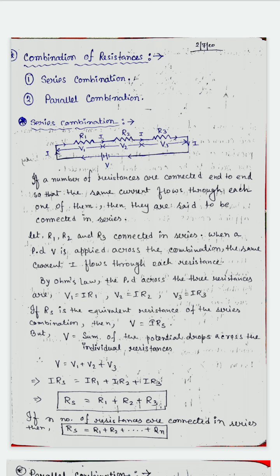From this figure you see that V is the potential difference across the total combination of three resistances. So we can say that V is the sum of the potential drops across the individual resistances: V = V1 + V2 + V3. Putting values in terms of resistance and current, we get I×RS = I×R1 + I×R2 + I×R3. Because I is constant, it cancels on both sides, giving RS = R1 + R2 + R3. If there are N resistances, then RS = R1 + R2 + R3 + ... + RN.